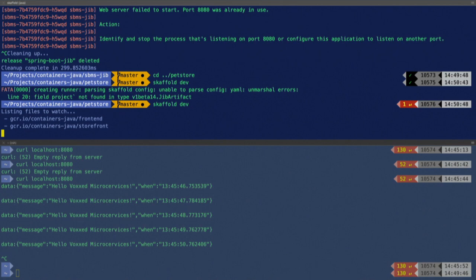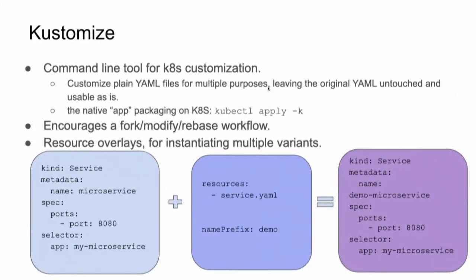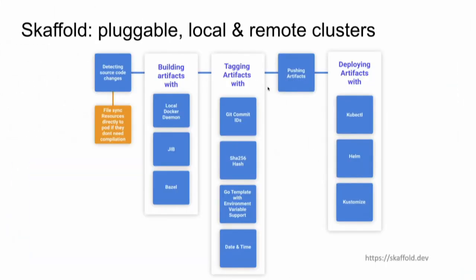Deploying an application with many microservices will take some time. To sum it up: Skaffold is pluggable and customizable for local and remote clusters. You can use many builders to build your application — I showed Docker and JIB, but you can use Bazel as well. For tagging artifacts, it supports many ways. It pushes your artifacts into the registry automatically, and it will deploy your application using either kubectl, Helm, or Kustomize.